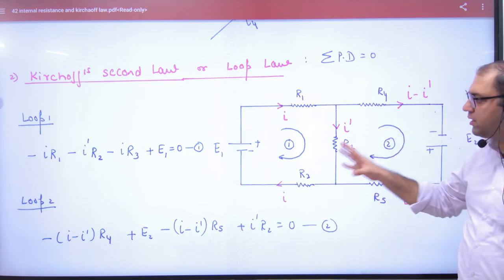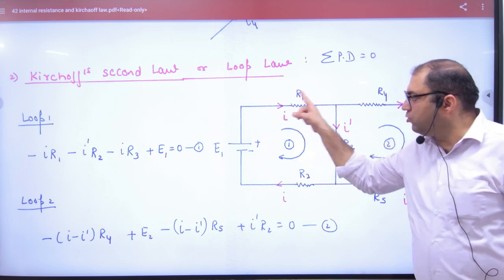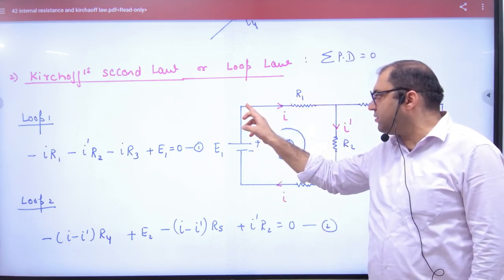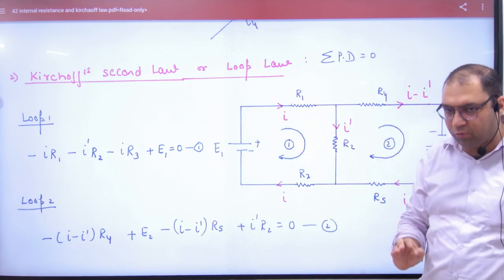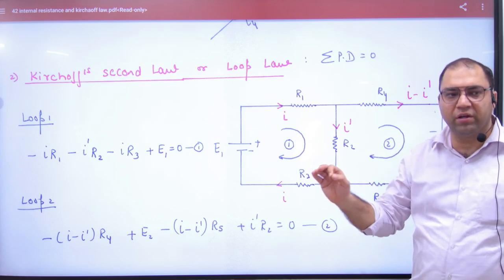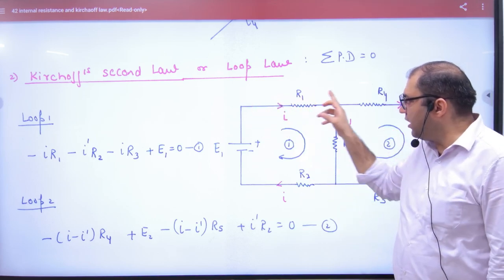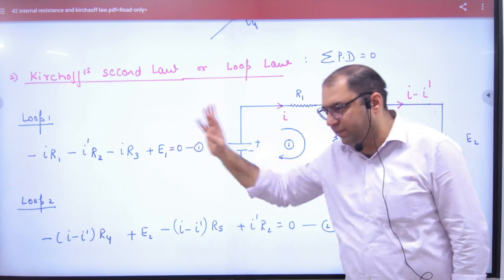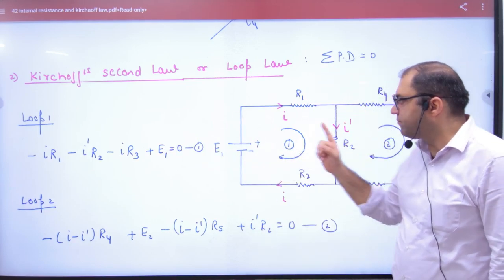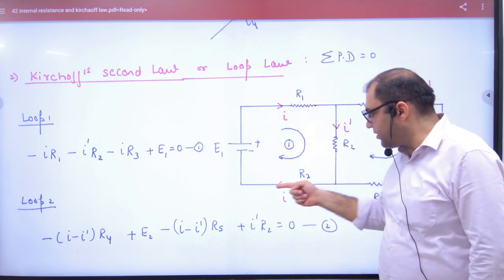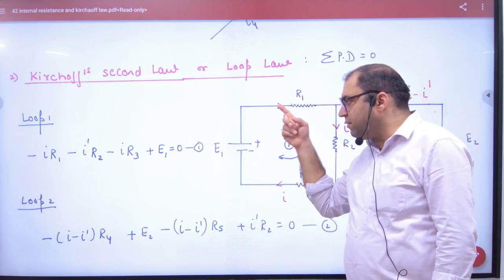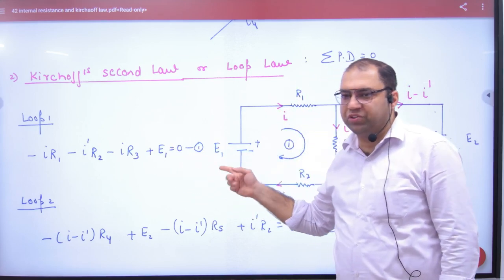Now let's focus on how the law looks. We take a closed loop, and if I start from the current direction going in the current direction, the potential difference is always negative. So minus i into R1. Then the current is down, so minus i' into R2. Then the current is going here, minus i into R3. Then minus to plus, so plus E1 equals zero.